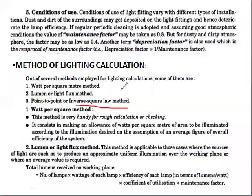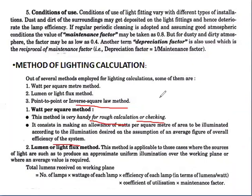The watt per square metre method is very handy for rough calculations or checking. It consists in making an allowance of watts per square metre of area to be illuminated according to the illumination desired, on the assumption of an average figure of overall efficiency of the system. This is very useful for rough calculations.